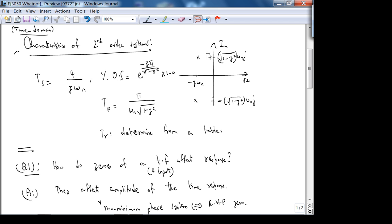What does not change if my poles move vertically? Out of these quantities, what does not change? Settling time, JP is right. Percent overshoot does not change if you move diagonally because zeta doesn't change.